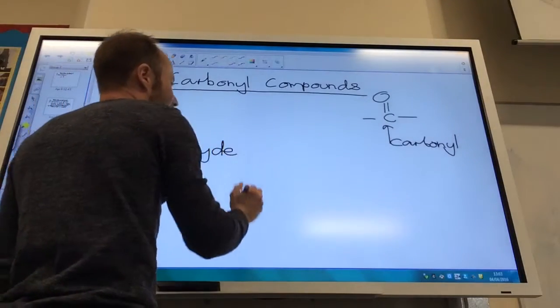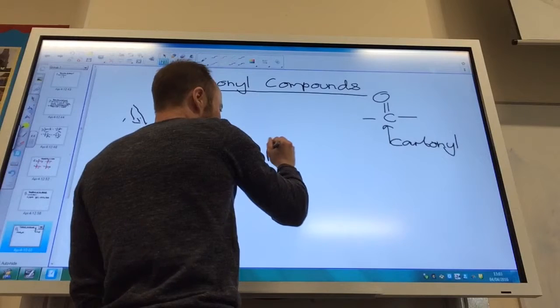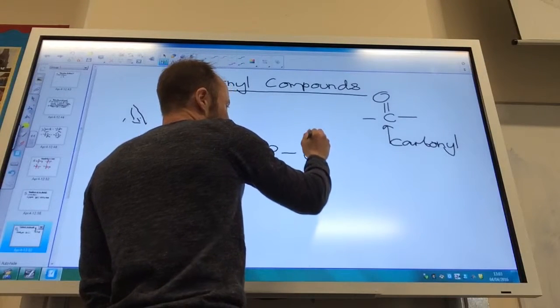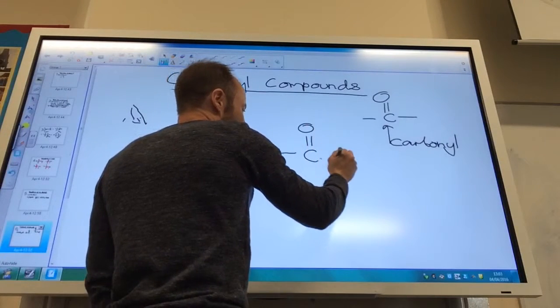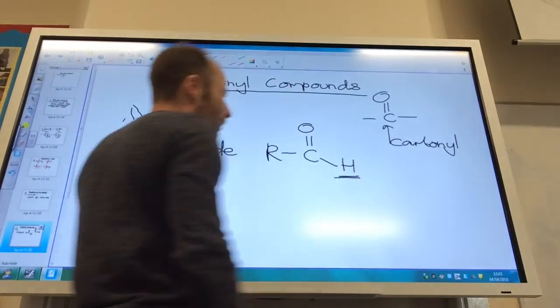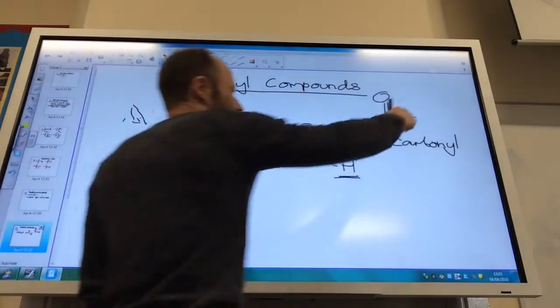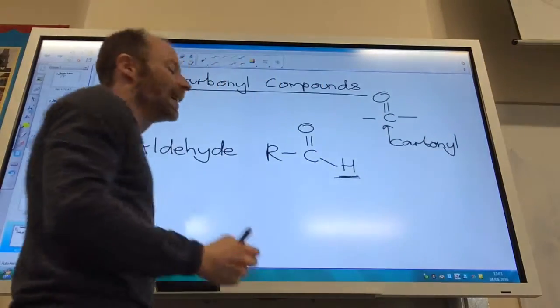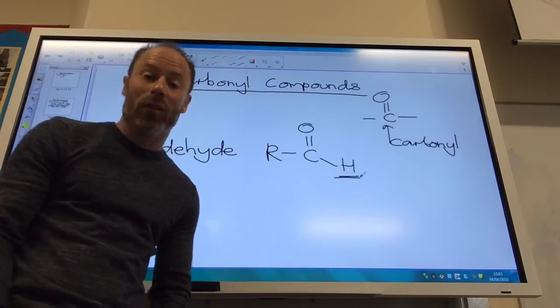Aldehydes have some carbon chain, C double bond O, and then an H at the end. That is what makes an aldehyde - this H at the end. This is always at the end of the compound.